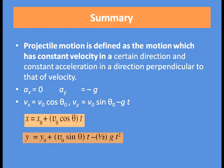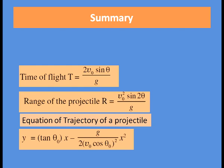Let us summarize what we have discussed today. Projectile motion is defined as motion which has constant velocity in a certain direction and constant acceleration in a direction perpendicular to that of velocity. Ax = 0, Ay = −g. Vx = V0 cos θ₀. Vy = V0 sin θ₀ − g·t. x = x₀ + V0 cos θ · t. y = y₀ + V0 sin θ · t − ½·g·t².